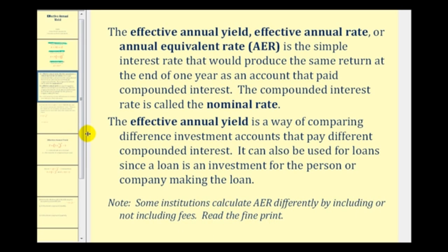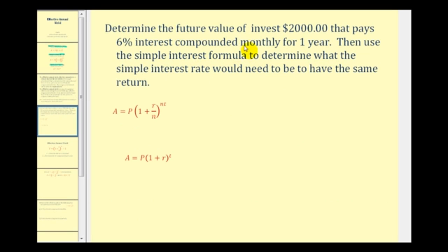Before we take a look at the formula for effective annual yield, let's look at an example. Determine the future value of an investment of $2,000 that pays 6% interest compounded monthly for one year. Here's our compounded interest formula — let's go ahead and answer this first question.